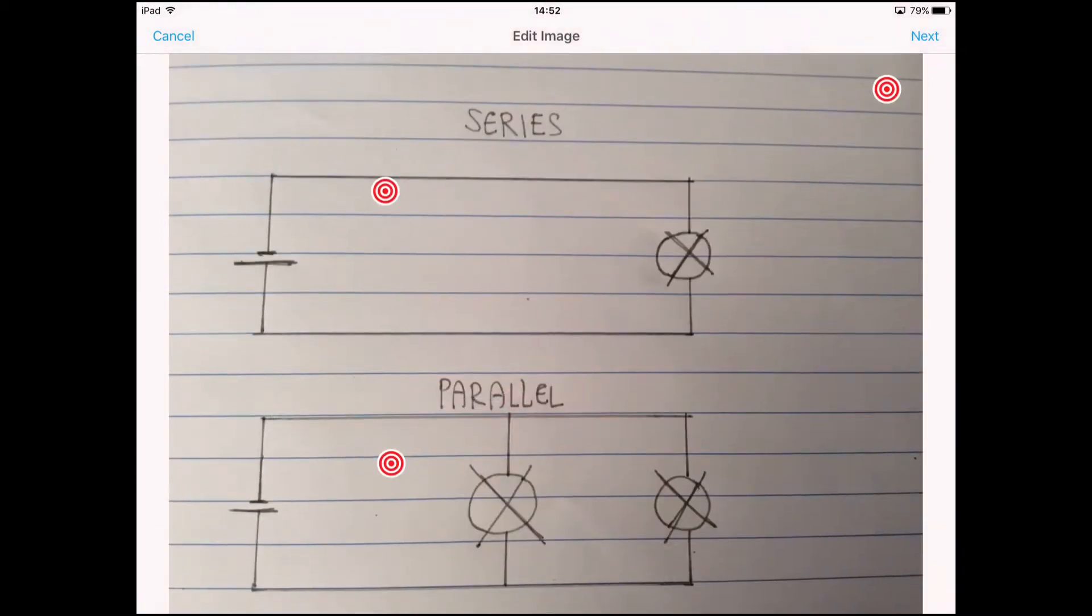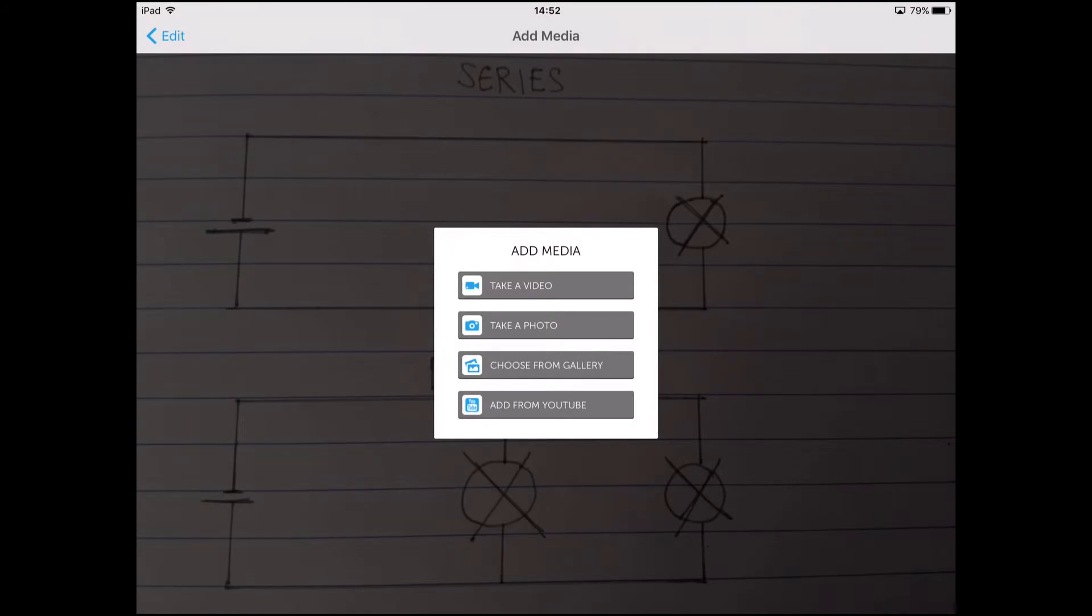Let's add some media now. Really easy to do. Just click where you want, then go to add media. You can take a video, a photo, choose a photo from the gallery, or you can go straight from YouTube.